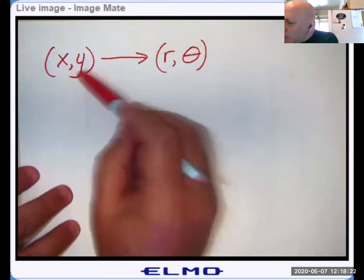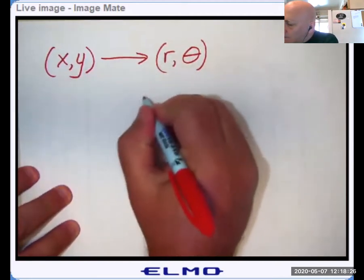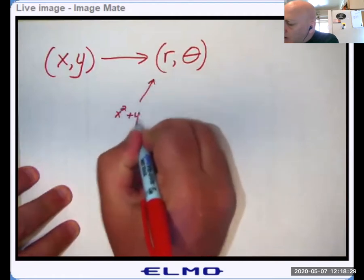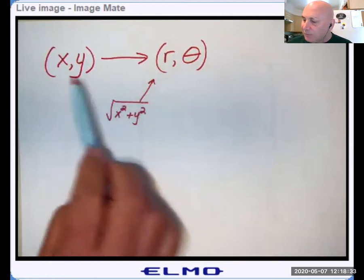Now, if I'm given x-y coordinates, how do I convert to r theta? Well, r is x squared plus y squared, and you take the square root. It's the distance from the pole.